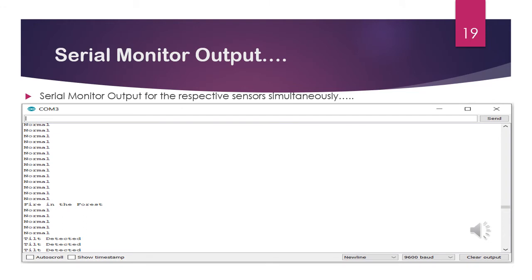In the previous slide I showed each sensor's output individually. In this picture, with all sensors connected and running simultaneously, both the flame sensor and tilt sensor show results in the same monitor. When the candle was lit it shows 'fire in the forest', and when the device was tilted it shows 'tilt detected'. When normal, both sensors show 'normal'. Whenever there is fire the flame sensor detects it, and whenever there is a tilt the tilt sensor detects it.